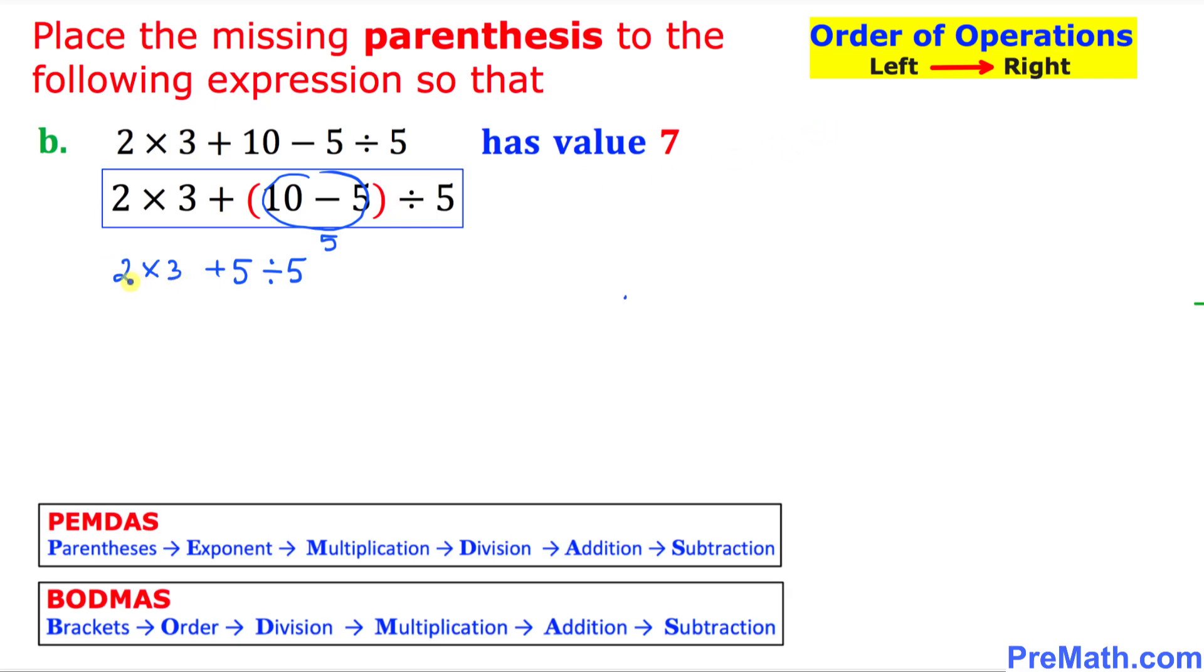Always remember left hand side first we're going to do this 3 times 2. That is going to give us 6 plus 5. And then we're going to do this part. 5 divided by 5 is 1. 6 plus 1 is going to be 7. And that is our correct value.